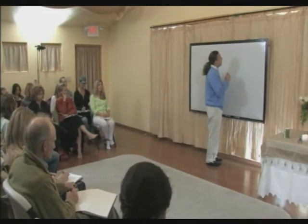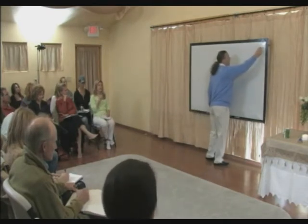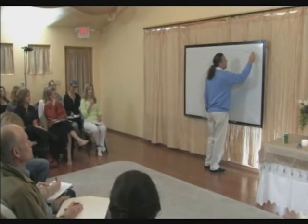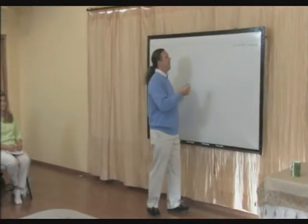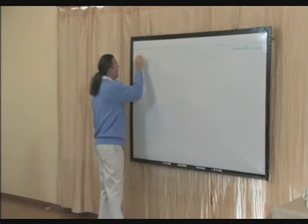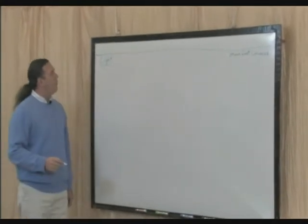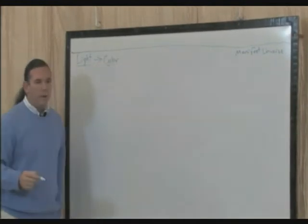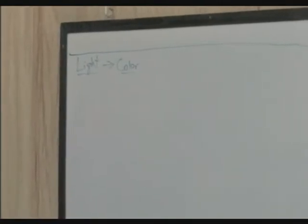Within the manifest universe, the first point of appearance is as light. Light further expresses itself through color, which are energetic frequencies of light. Color, of course, gives description to frequency.